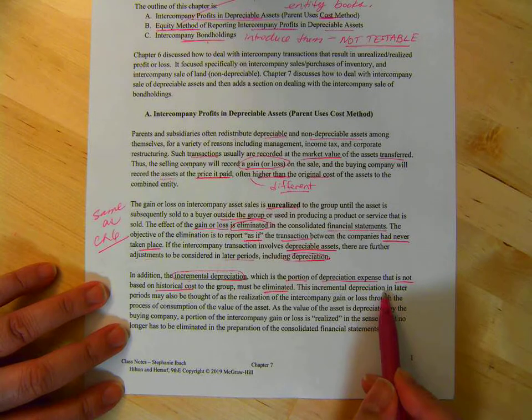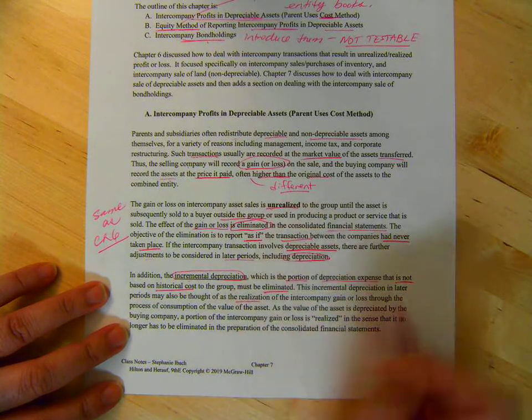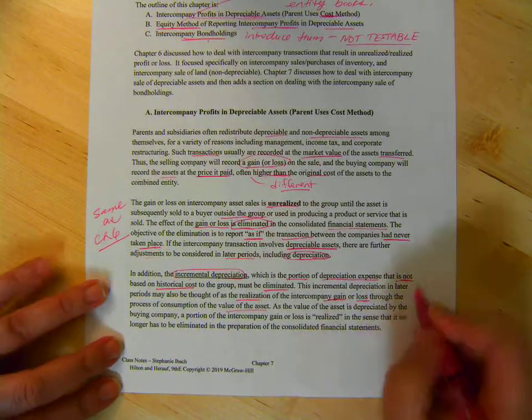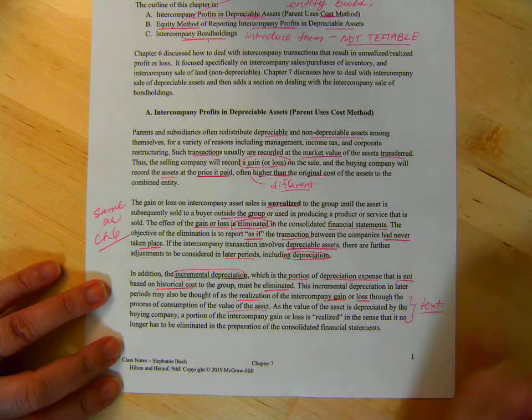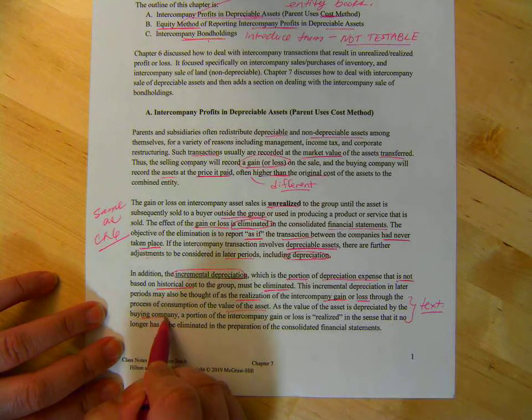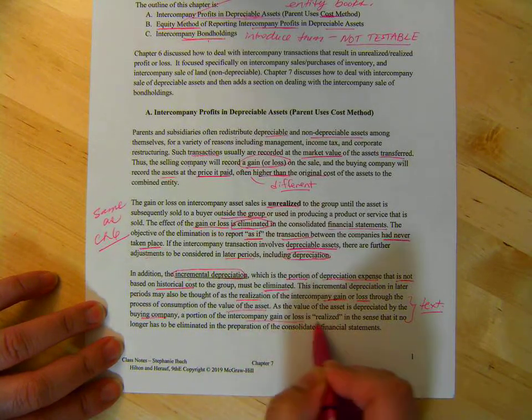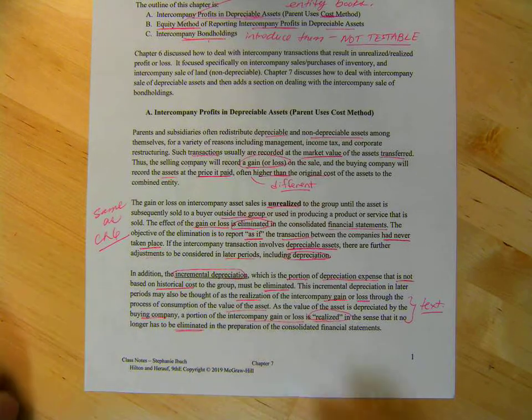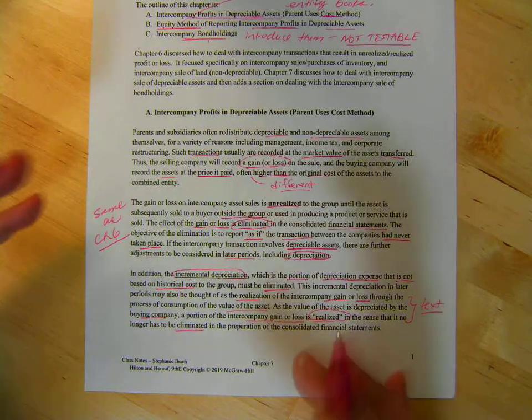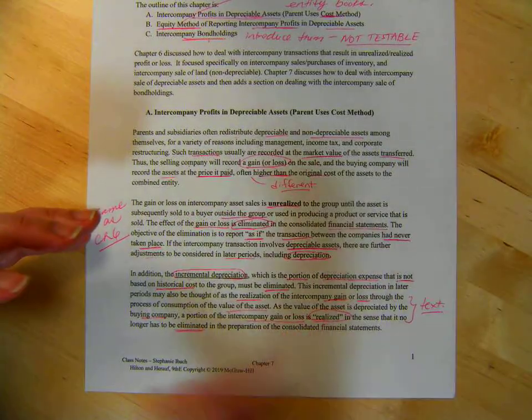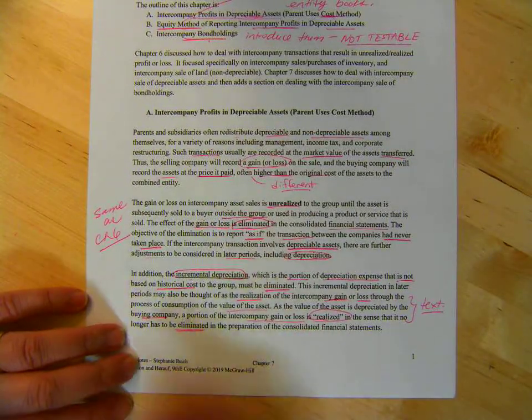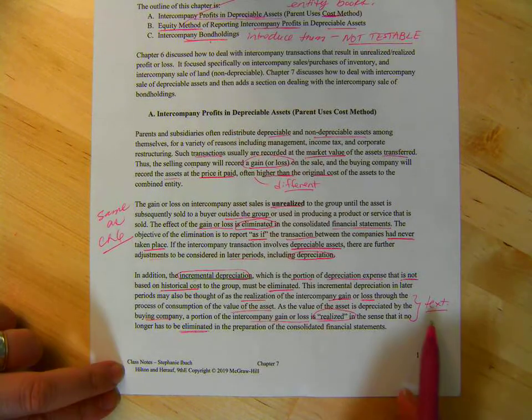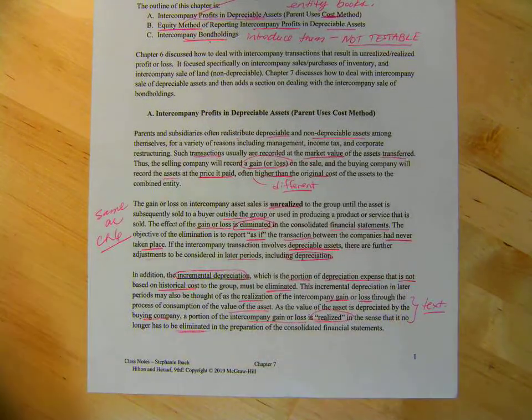So, this incremental depreciation in later periods may also be thought of as the realization of the intercompany gain or loss through the process of the value of the assets. This is in the text that you can read. As the value of the asset is depreciated by the buying company, a portion of the intercompany gain or loss is realized in that it doesn't have to be eliminated because it's been depreciated somewhat. So, you're not taking the whole, let's say it was a gain of $6,000. It's getting smaller because you eliminate part of it when you do the depreciation. I'll mention it as we go through. It's not a big deal, but if you are interested, read the text because they give a good explanation.